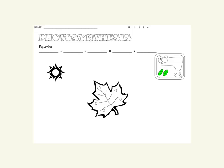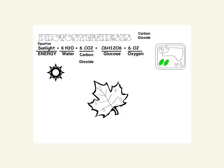Let's talk about the equation real quick. It takes sunlight, which is energy, plus water, which is H2O, and then carbon dioxide, which is CO2. Those three things put together — sunlight, water, and carbon dioxide — inside of a plant, the plant processes that and changes it into glucose, which is better known as sugar, which is pretty much the basis of almost everything we eat for energy.